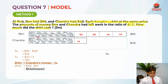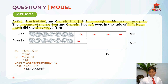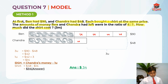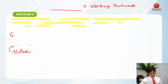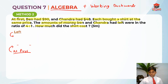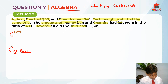Method 2 is not using Ben's money as an alternative — it's a completely different method. Now we are going to be working backwards with algebra. Let me highlight the key information again.